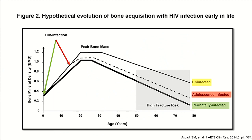For those who acquired HIV infection during adolescence—for example, through behaviorally acquired HIV infection—prior to HIV infection their bone mineral acquisition seems normal. But after HIV infection, it can compromise their bone mineral accrual, also resulting in reduced adult peak bone mass and then rapidly declining over time.